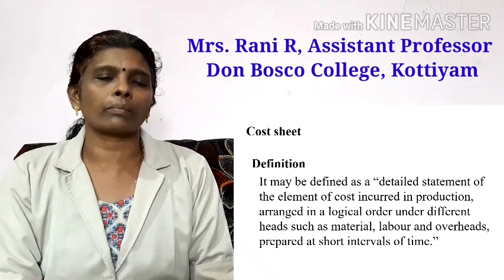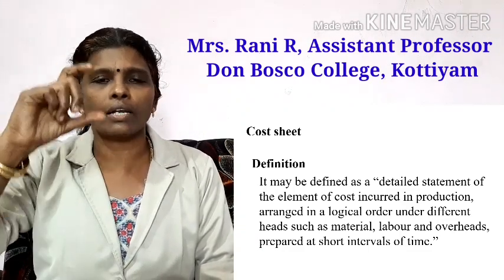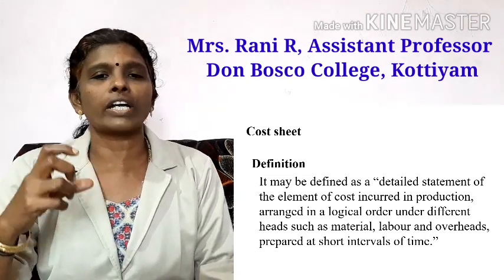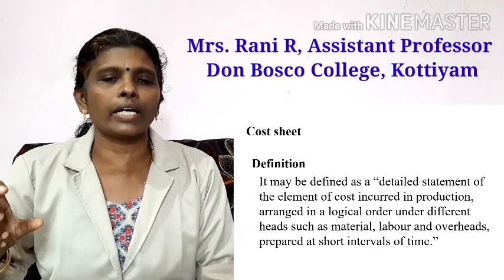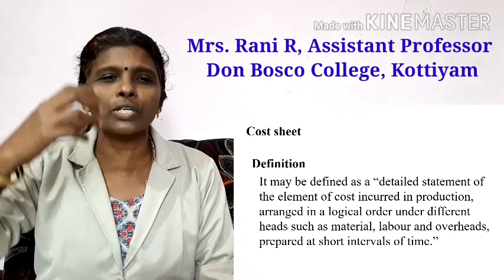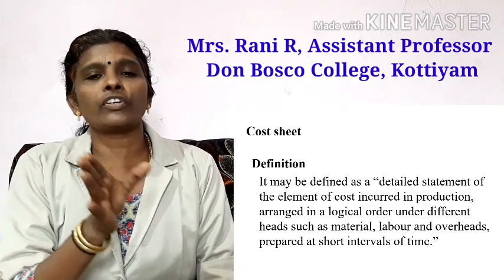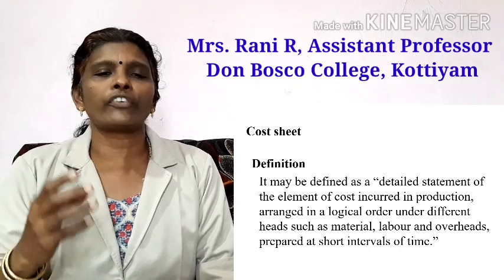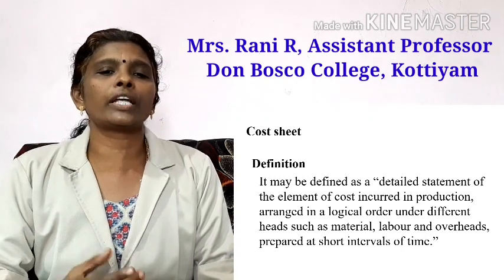It is arranged in a logical order. First, we calculate the prime cost and add additional items and work cost, then add the amount of cost in the administrative overhead, and add the cost of production — that is the selling and distribution overhead — and then the total cost of sales. It is arranged in a logical order under different heads, such as material, labour, and overheads.